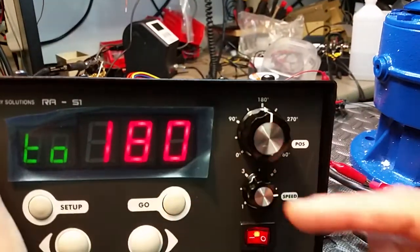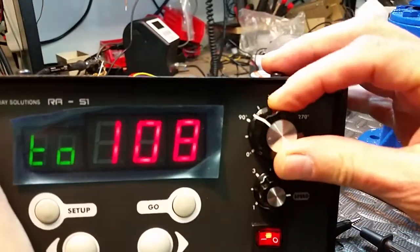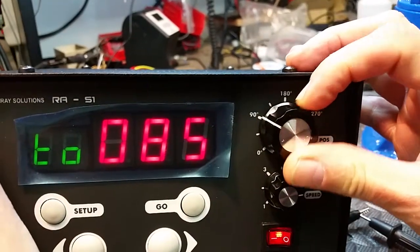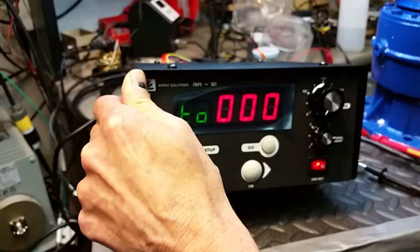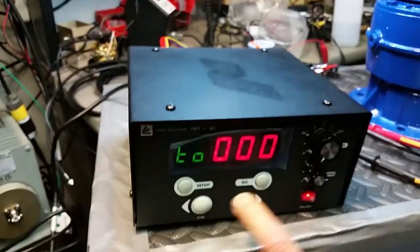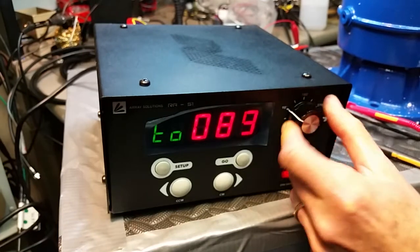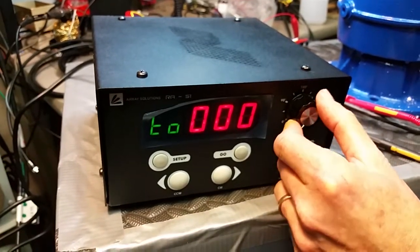You can see at 180, we're showing 180. At 90, it shows 90. At zero, it shows zero. So it's a very good way to just kind of look at where you're going and point it in and let it go.